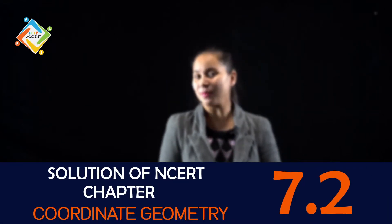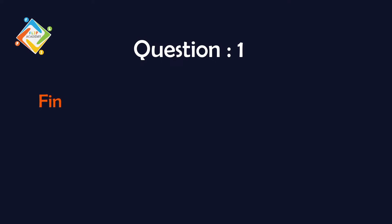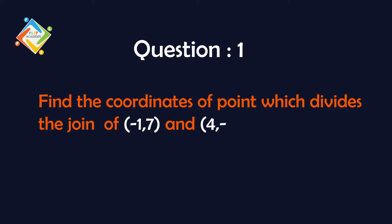Now let's try coordinate geometry exercise 7.2, question number 1. The question is: find the coordinate of the point which divides the join of (-1,7) and (4,-3) in the ratio 2:3.